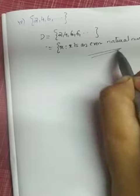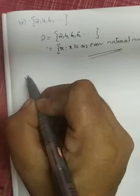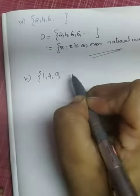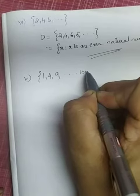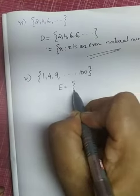There is no need of any other condition - x is an even natural number. The fifth part of the question is the set {1, 4, 9, ..., 100}. I am naming this set as E = {1, 4, 9, ..., 100}. We have to rewrite it into set builder form.